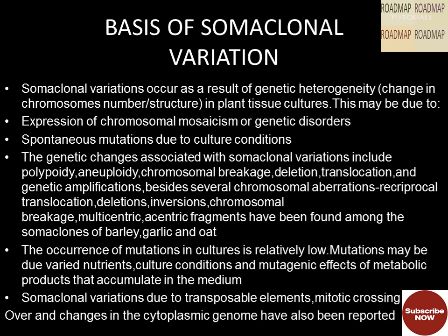Besides several chromosomal aberrations — including reciprocal translocations, deletions, inversions, chromosomal breakage, and multicentric/eccentric fragments — have been found among somaclones of barley, garlic, and oat. The occurrence of mutations in cultures is relatively low. Mutations may be due to varied nutrients, culture conditions, and mutagenic effects of metabolic products that accumulate in the medium. Somaclonal variations due to transposable elements, mitotic crossing over, and changes in the cytoplasmic genome have also been reported.